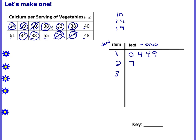So now we have to put the leaves — the ones digits — in order from least to greatest. I have an eight, a two, an eight, a four, and an eight. Two is the smallest, so I cross this off. Then I have three eights and a four. Four is the smallest, and then each of the eights I have to list because there are three of them. So that takes care of my thirties.